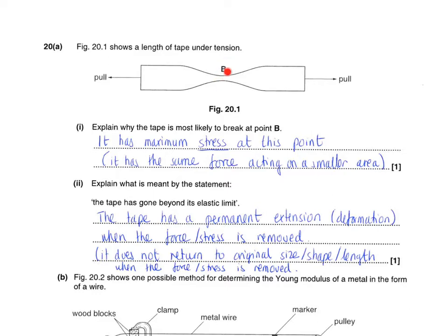I hope obviously from looking at the diagram at point B we've got the smallest cross-sectional area. You should also be aware that materials break when they reach a certain stress. Now throughout this piece of tape, the whole length of that piece of tape, we've got the same force. So the stress is going to be greatest where we've got the smallest cross-sectional area at point B.